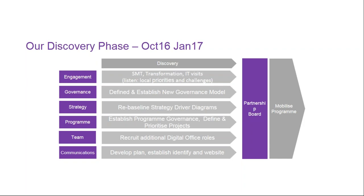When we first started, there were six key things our board came to us and said this is what you should maybe look at to begin with. By Christmas we had 50 things for transformation. We went back to the board and said what's the priority — and funnily enough they said all of them. So what we tried to do was pull them into 18 key programs of work, which we'll cover in a minute.